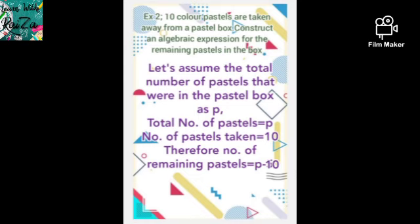Now let's move into another example. 10 color pastels are taken away from a pastel box, and we need to construct an algebraic expression for the remaining pastels. They have not given the total number of pastels, so we have to assume a letter — an algebraic letter. I am taking P. Let's assume the total number of pastels in the pastel box as P. So total number of pastels equals P, and the number of pastels taken away is 10.